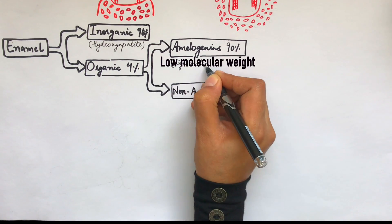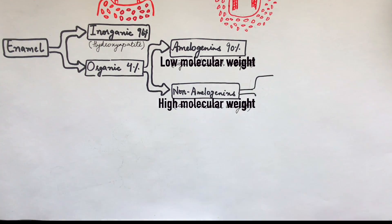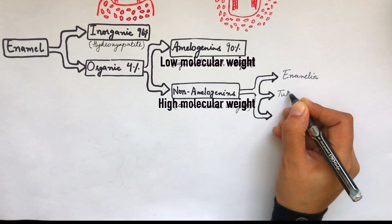Where the amelogenins are low molecular weight proteins, the non-amelogenins are high molecular weight proteins. Enamelin, ameloblastin, and tuftulin are the important proteins of this group.